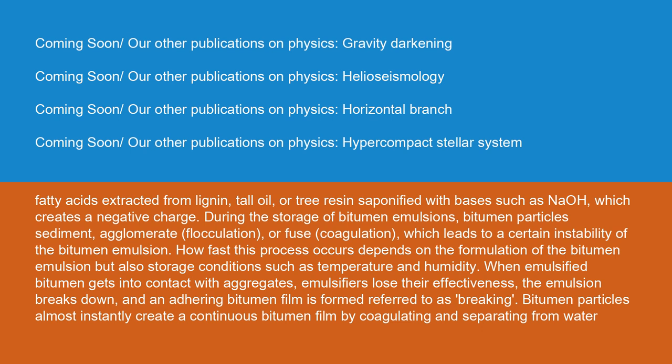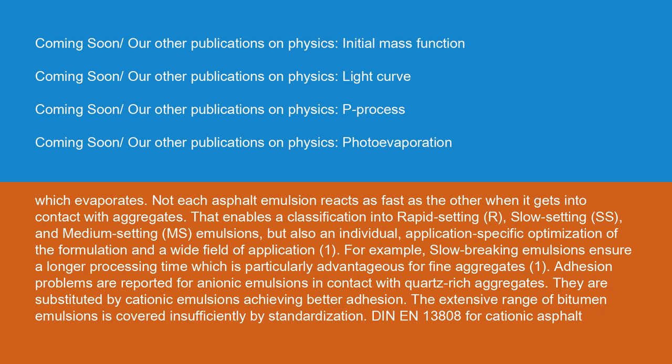Bitumen particles almost instantly create a continuous bitumen film by coagulating and separating from water, which evaporates. Not each asphalt emulsion reacts as fast as the other when it gets into contact with aggregates. That enables a classification into rapid setting (R), slow setting (SS), and medium setting (MS) emulsions. For example, slow-breaking emulsions ensure a longer processing time, which is particularly advantageous for fine aggregates. Adhesion problems are reported for anionic emulsions in contact with quartz-rich aggregates; they are substituted by cationic emulsions achieving better adhesion. DIN EN 13808 for cationic asphalt emulsions has been existing since July 2005, providing a classification based on letters and numbers considering charges, viscosities, and the type of bitumen.